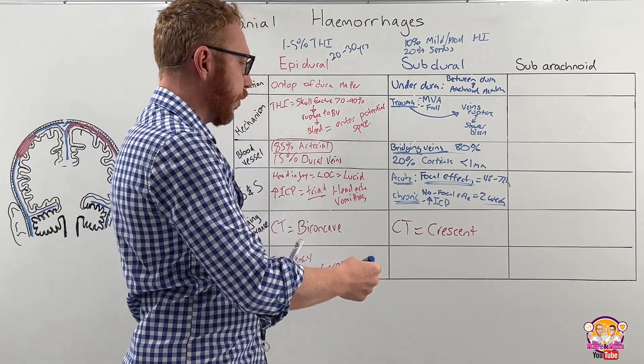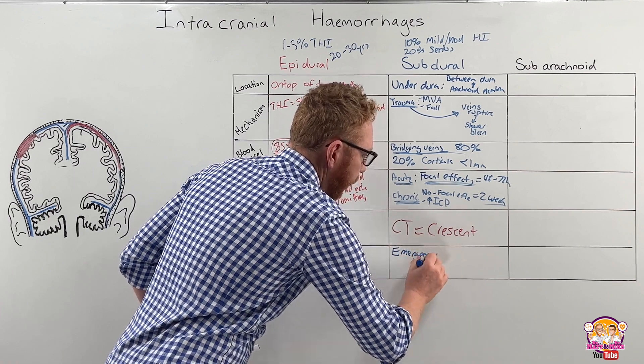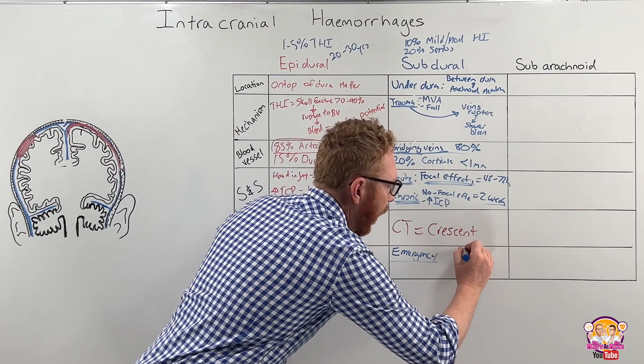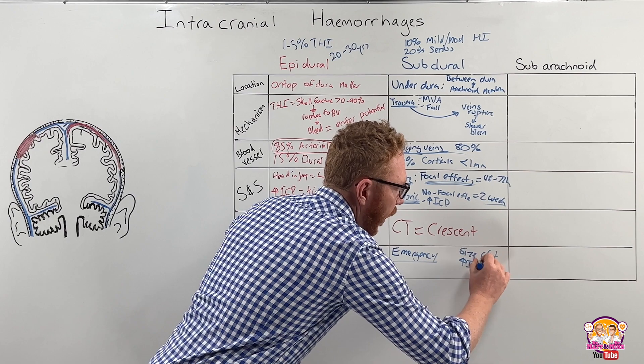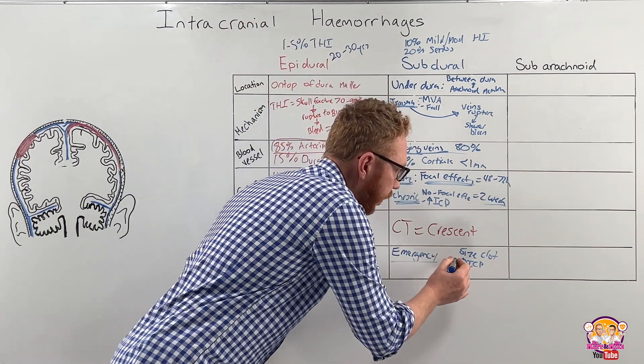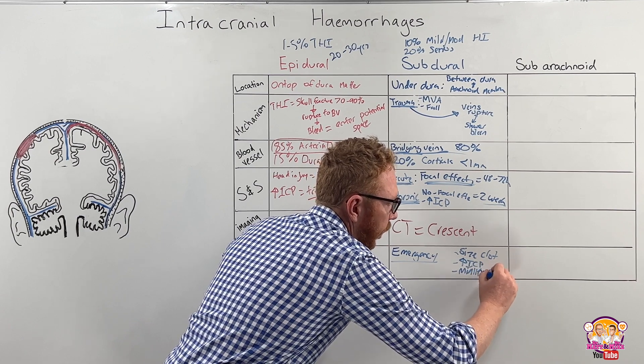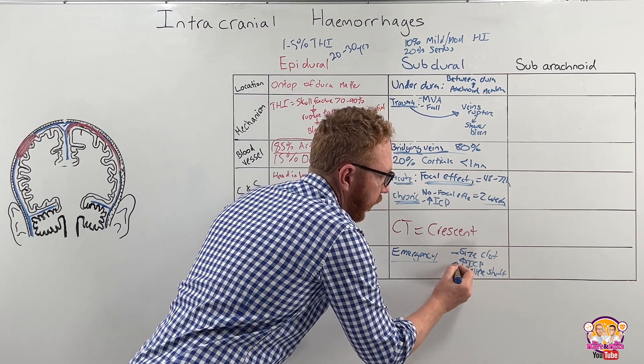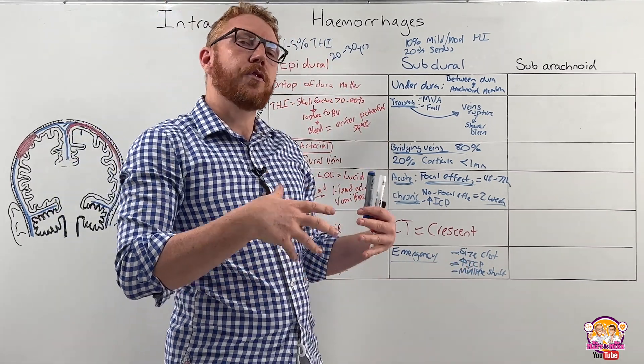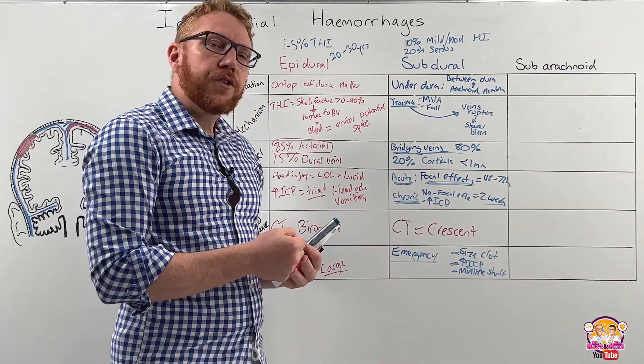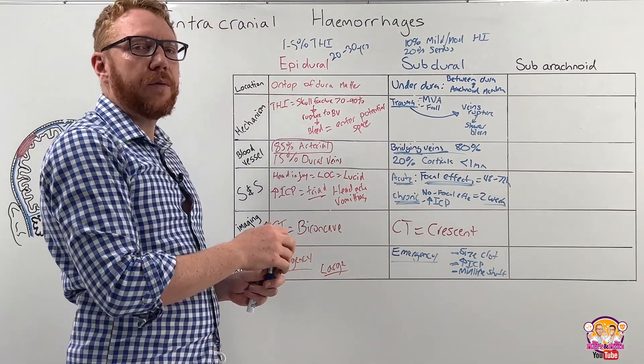And then when we go to the treatment, again, this would be an emergency. And the way that it's treated would depend on the size or thickness of the clot, the ICP, so how much the intracranial pressure is increasing, and if there is any midline shifts. And based on the characteristics of those, we'll determine the way that it's managed, whether it will be done through diuretics to reduce the ICP, or whether we would do a clot removal like we saw with the epidural.